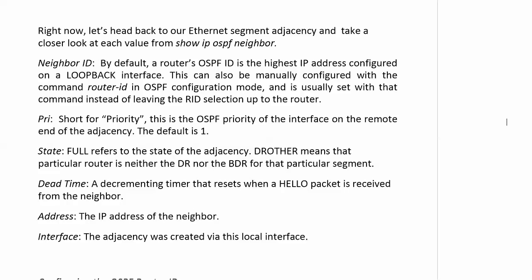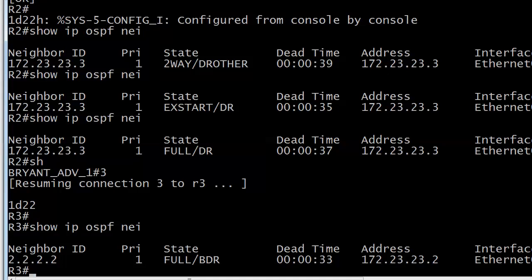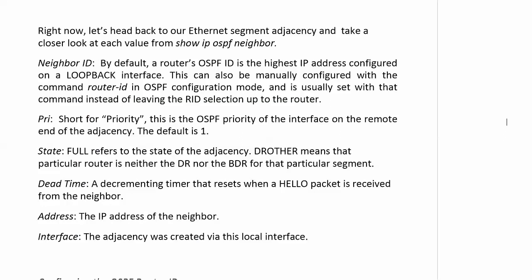Now, state - we saw a couple of different states, but of course what we finally want is full. We see DR here, BDR here. Router 2 is saying my neighbor at 23.3 is the DR - the designated router for our Ethernet segment. Router 3, in turn, is saying router 2 is the BDR for that segment. And if it was not a DR or BDR - if we had three routers on a particular segment - then the others would be DR others.